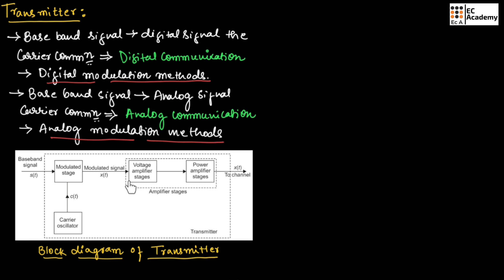This modulated signal X(t) is given as input to the amplifier stage, which consists of two amplifiers: a voltage amplifier stage and a power amplifier stage. The voltage amplifier stage amplifies the voltage of the modulated signal, and the power amplifier stage amplifies the power of the modulated signal. This gives the signal enough power to reach the receiver stage of the communication system. Once amplified, the signal is transmitted to the channel for further communication.